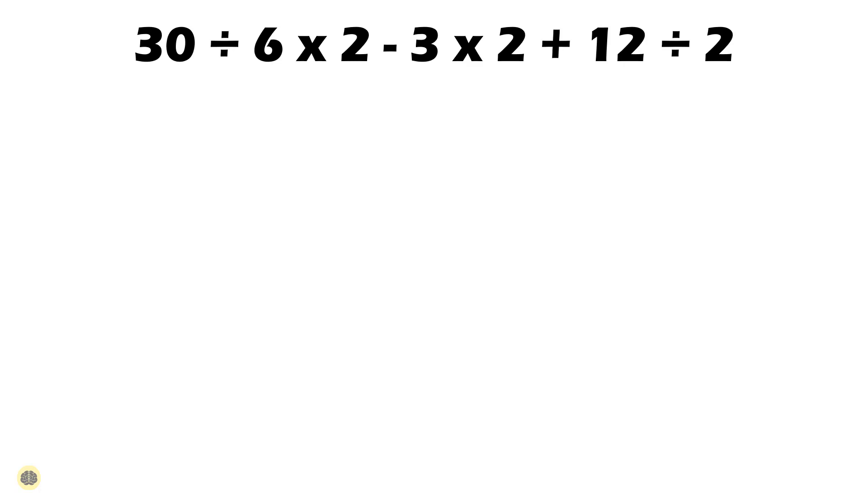In step 1, let's perform the division. We start by performing any division operations from left to right. In the given expression, the first division is 30 divided by 6 which is equal to 5. At this point, the expression becomes 5 times 2 minus 3 times 2 plus 12 divided by 2.